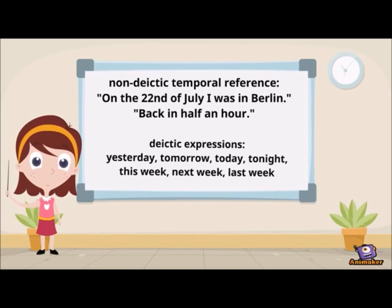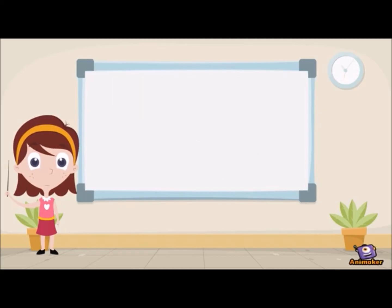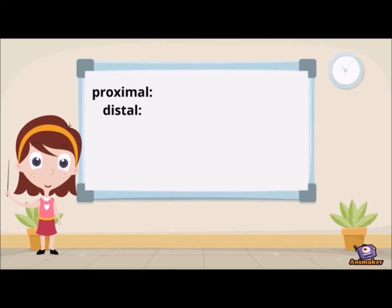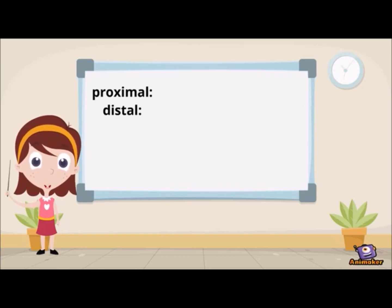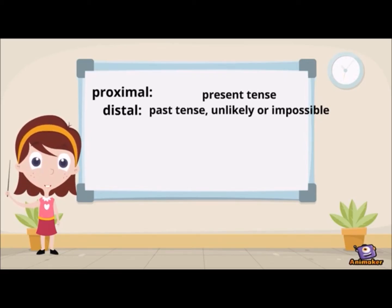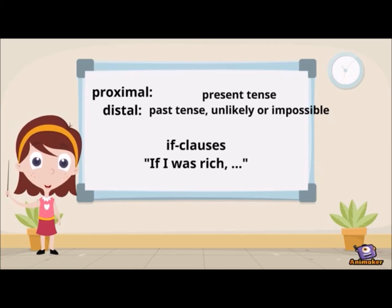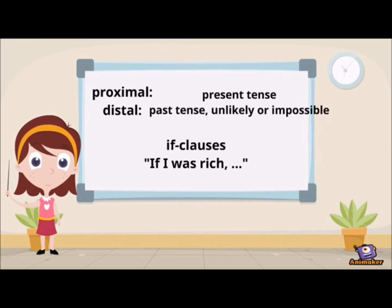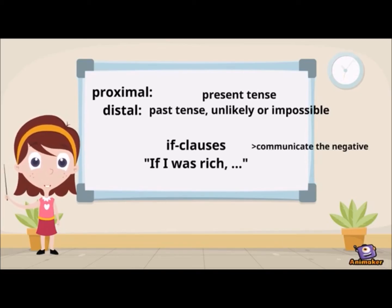By the choice of verb tense you can indicate the proximal or distal form. The present tense is the proximal form. The distal past tense marks something that took place in the past, or something extremely unlikely or even impossible. Past tense is also used in if-clauses for events not close to present reality — for example, 'if I was rich' — where they are so distant that they communicate the negative.